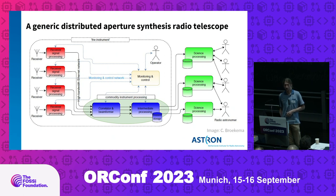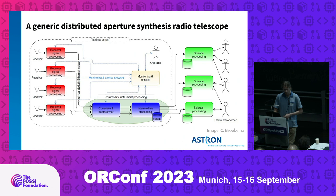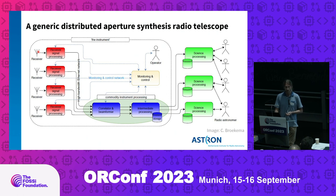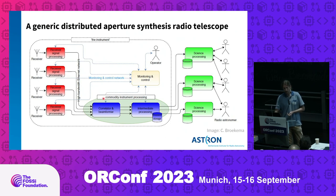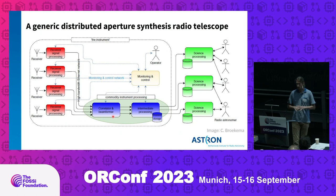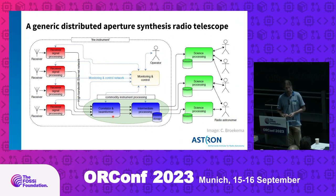Looking at a high-level view of an aperture array radio telescope system: we have receivers at the front end — these can be dishes or any other kind of receiver for radio signals of interest. We read out these receivers using FPGAs and ADCs, and where possible we apply some preprocessing there, such as beamforming, to reduce the amount of data we have to transport. Then we move the data to a central location where we apply correlation and beamforming — that is where we computationally combine these signals, also filtering out RFI and other unwanted signals.